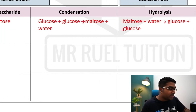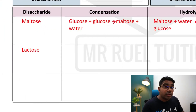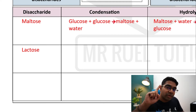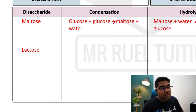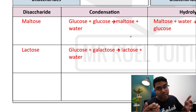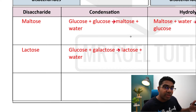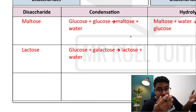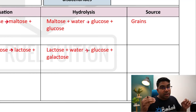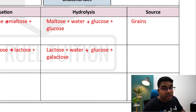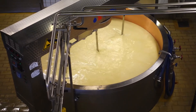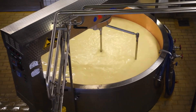The next disaccharide is lactose. All disaccharides have glucose, but the other monosaccharide in lactose is galactose. So glucose and galactose combine by condensation to give lactose and water. Hydrolysis is just the opposite: lactose plus water gives glucose and galactose. Lactose is found in dairy products, and therefore it is found in milk.